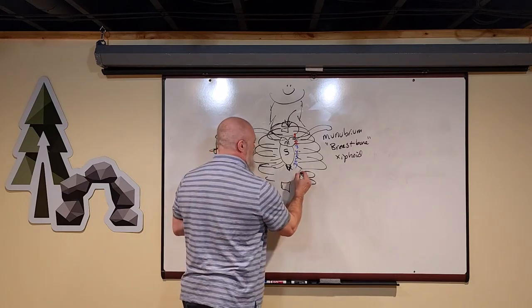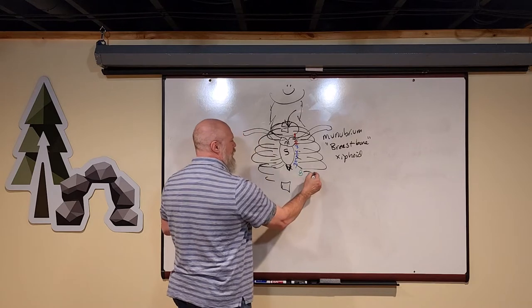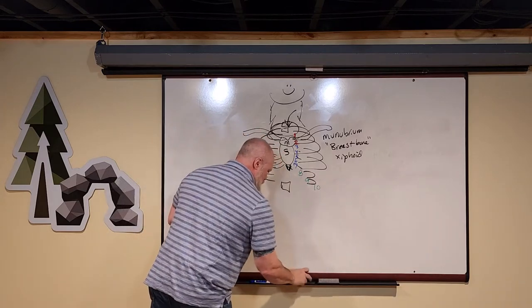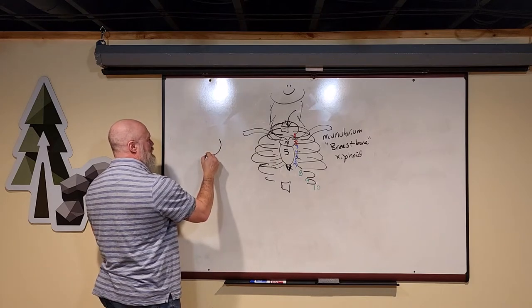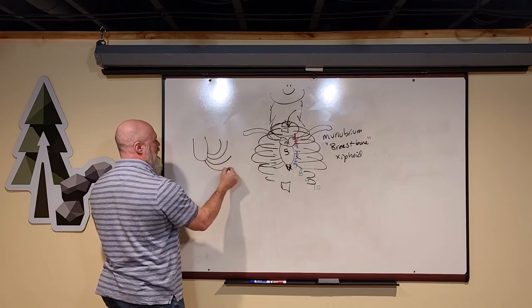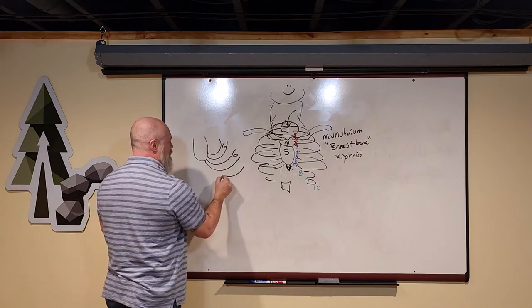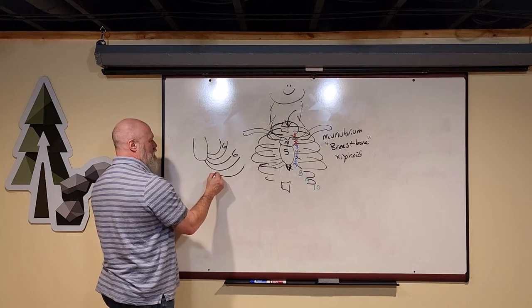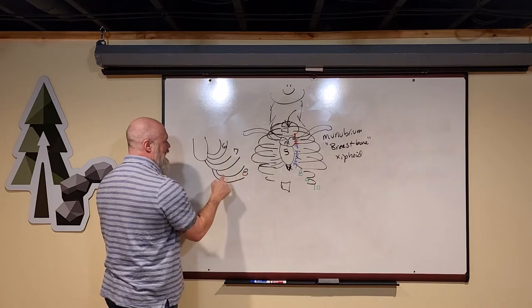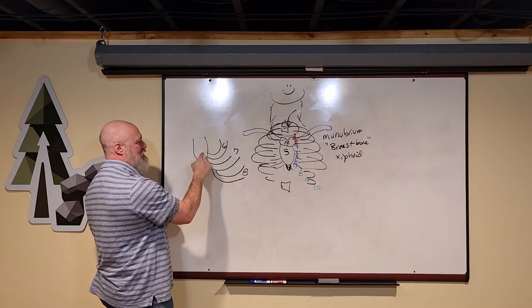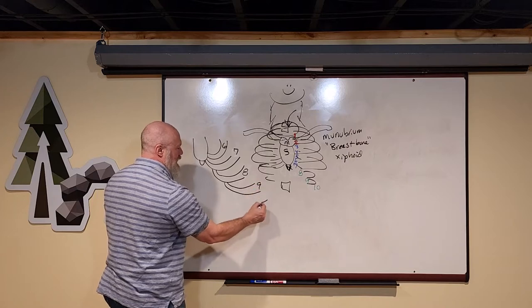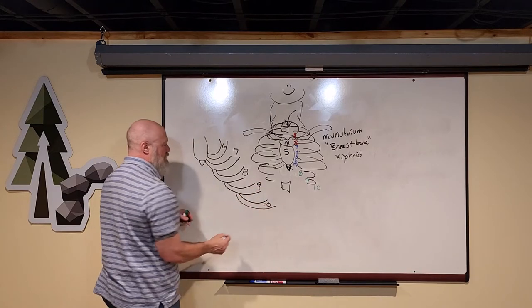And then ribs eight, nine, and ten are going to come around and attach to the cartilage of the rib superior to it. So I've got rib six that comes around and it attaches right to the sternum. And I've got rib seven that comes around and attaches right to the sternum. Rib eight will come around and attach to the cartilage of rib seven. So indirectly attaching to the sternum. Rib nine will come around and attach to the cartilage of rib eight. Rib ten will come around a little shorter and attach to the cartilage of rib nine.